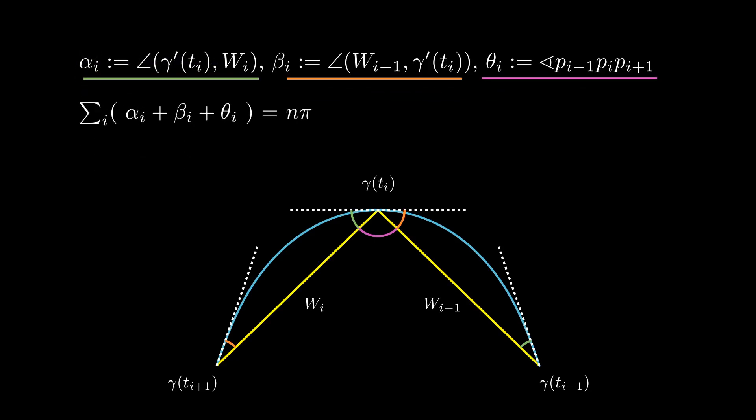Now summing over all i, we get nπ, but from the previous lemma, we know that the sum of the interior angles is (n-2)π, so this implies that the sum of the alphas and betas is precisely 2π. All we are left to show is that the sum of alphas and betas is precisely the total signed curvature of gamma.